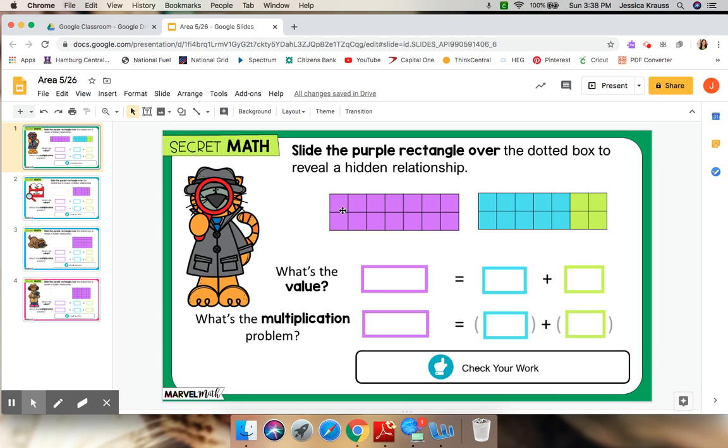I see that it's by two so I'm going to count by twos. Two, four, six, eight, ten, twelve, fourteen. So the value of the purple rectangle is fourteen.